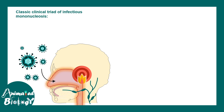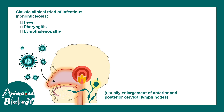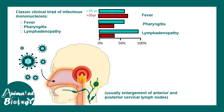The classical clinical triad of EBV infection is fever, pharyngitis, and lymphadenopathy — especially enlargement of the anterior and posterior cervical lymph nodes. The magnitude and propensity of these symptoms differ across age groups, particularly between those under 35 and those over 35 years, but these are the key clinical symptoms.